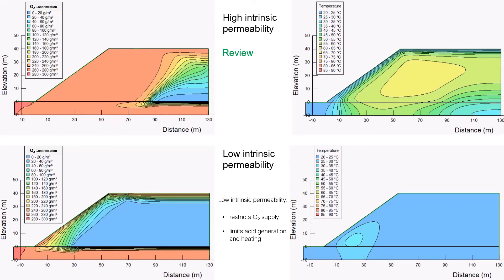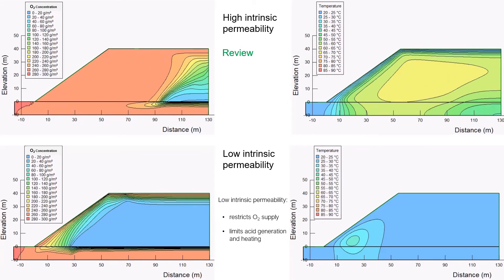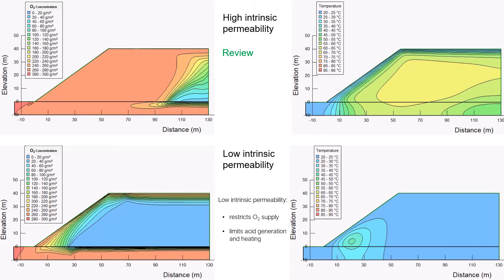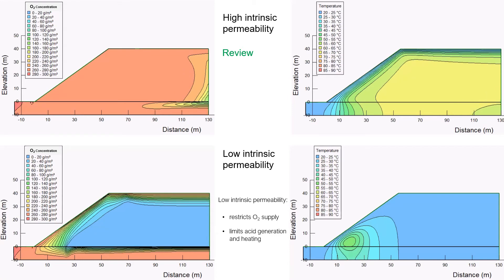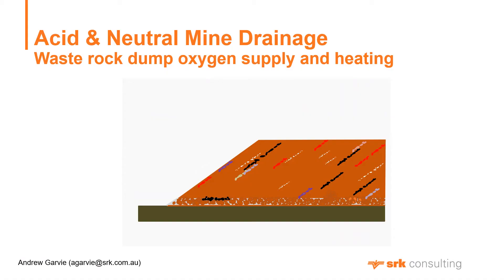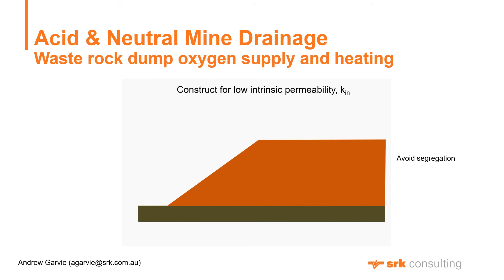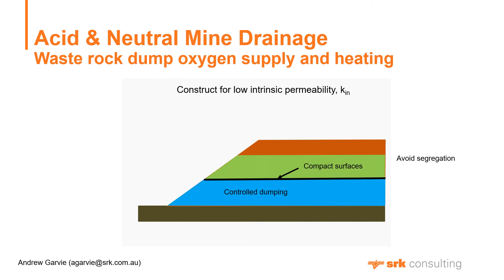Furthermore, modelling of various scenarios that take account of site-specific conditions can guide the design of dumps that limit the generation of acid mine drainage. For example, dumps could be constructed to ensure that appropriate low intrinsic permeability is achieved. This might include taking care to avoid the segregation of particle sizes, using controlled dumping methods, and compacting surface layers to achieve low intrinsic permeability at strategic locations.